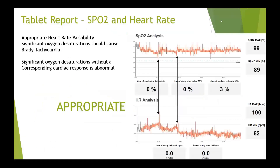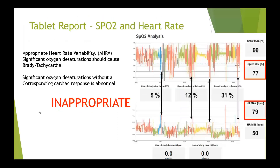Now we're going to look at the heart rate and SpO2 graphs together to make sure we're seeing what we'd expect, and to rule out any possible signs of comorbidities. On the SpO2 analysis there's a deSat or two, and if you follow the black arrow giving you a timeline, you'll see an increase in heart rate at that point. You want to see the heart rate respond appropriately to an oxygen desaturation — that is a normal response.